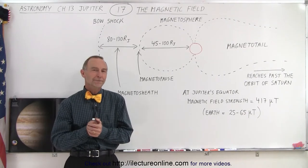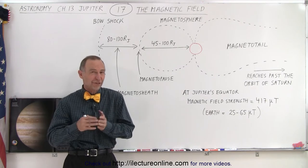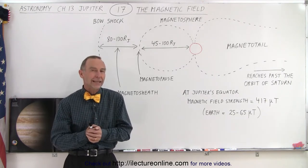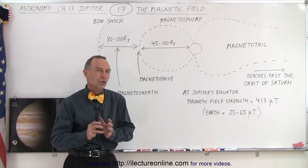Welcome to ElectronLine. One of the most striking features, even though it's not visible to the naked eye, is the magnetic field and the magnetosphere in front of Jupiter.